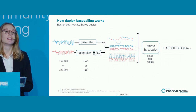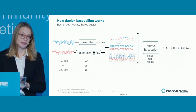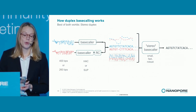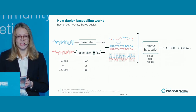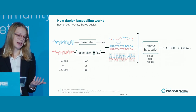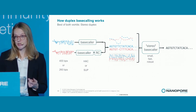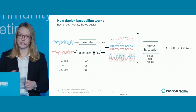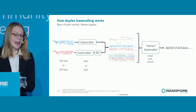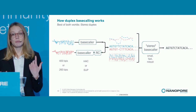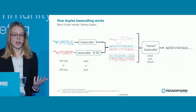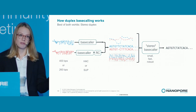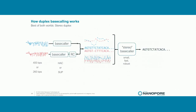In addition, it's extremely robust to different kinds of input. We've trained one stereo base caller model that can accept input data from either of our two speed conditions — 400 or 260 bases per second — and it can receive input base calls from either the HAC or the SUB model. Any of those combinations fed through the stereo base caller will produce significant accuracy improvements.